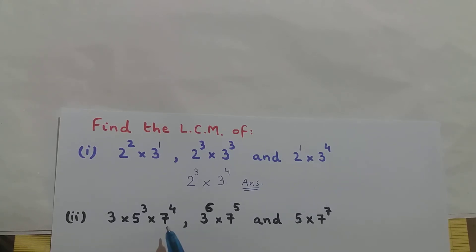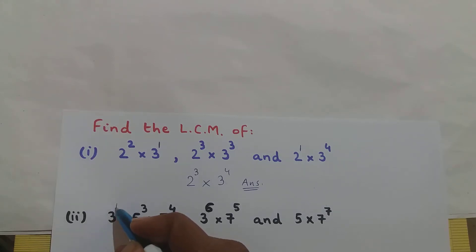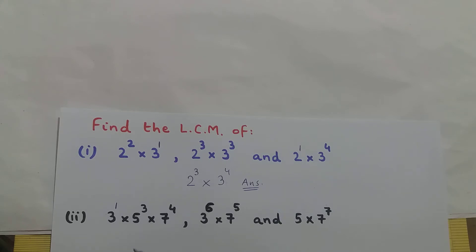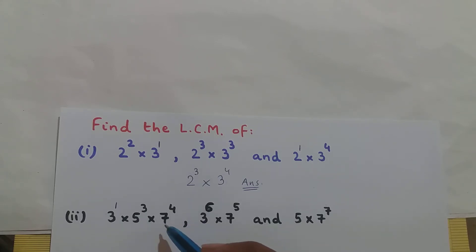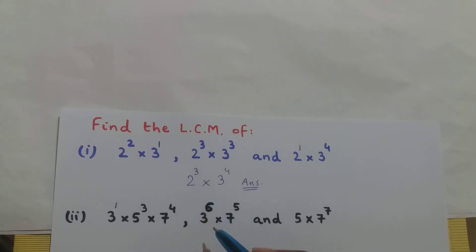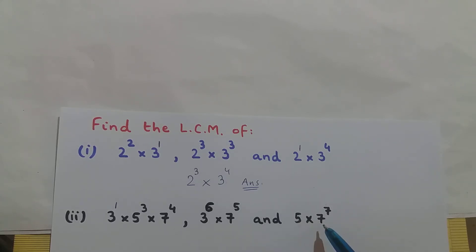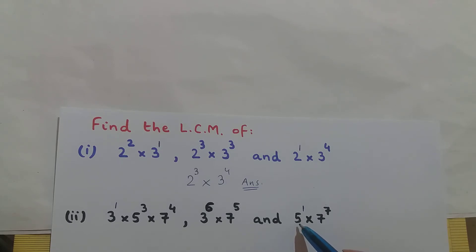In these expressions, the bases are prime numbers. In the first: 3 means 3¹ so base 3 is prime, base 5 is prime, and base 7 is prime. In the second: base 3 is prime and base 7 is prime. In the third: 5 means 5¹ so base 5 is prime, and base 7 is prime.